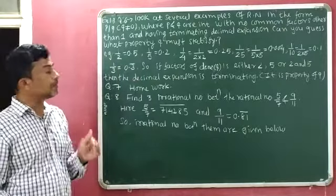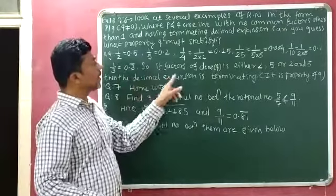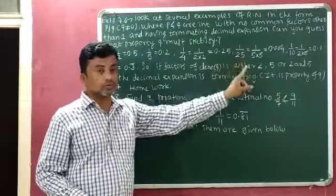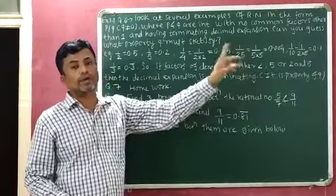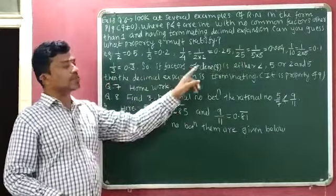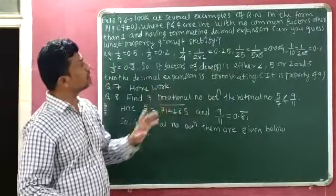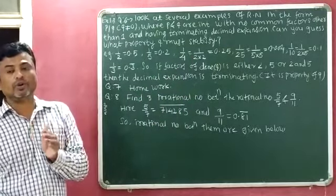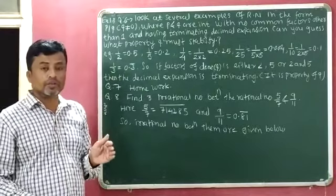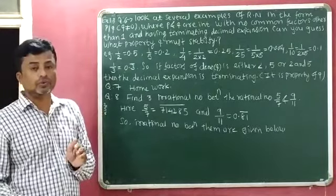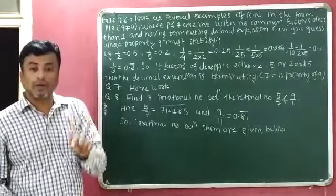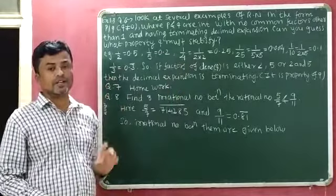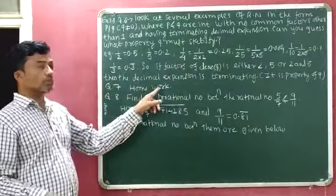So the final conclusion is: if the factors of the denominator Q are either 2, or 5, or both 2 and 5, then the decimal expansion is terminating — and that is the property Q must satisfy. Question 7 is homework. Now, question number 8.